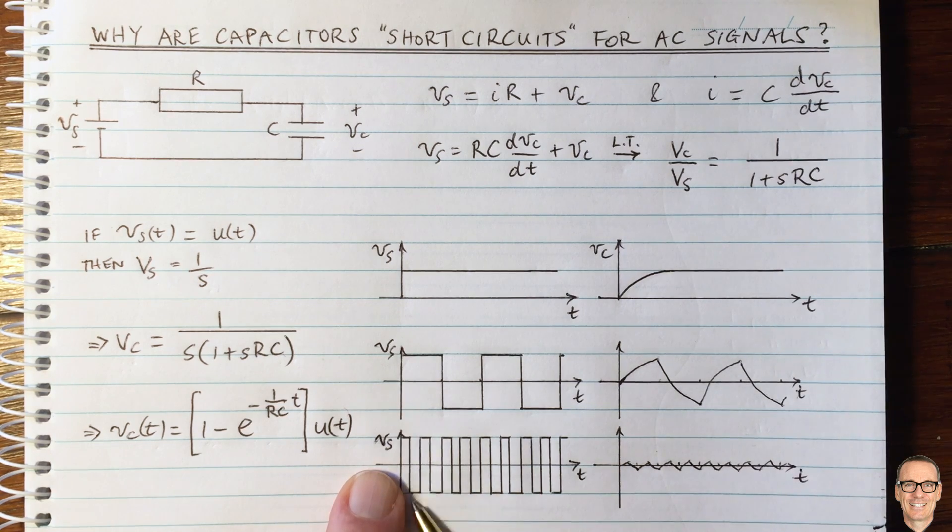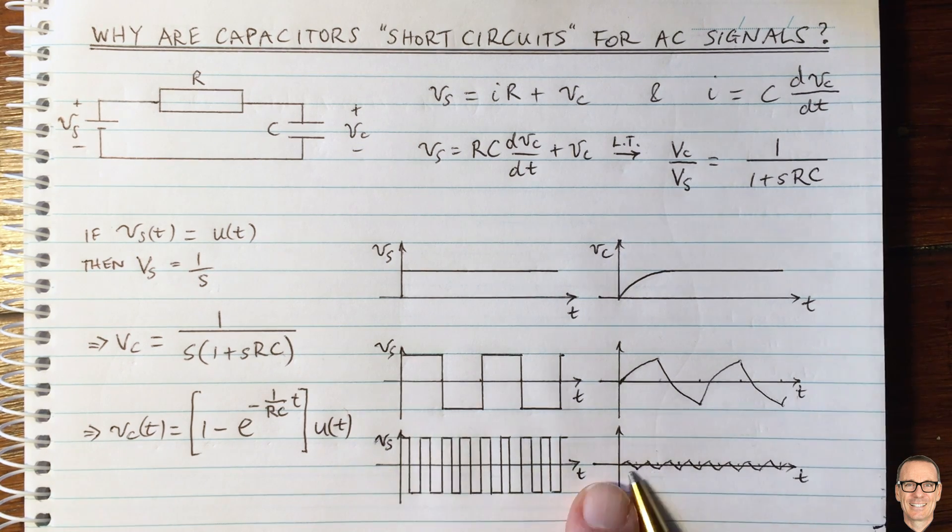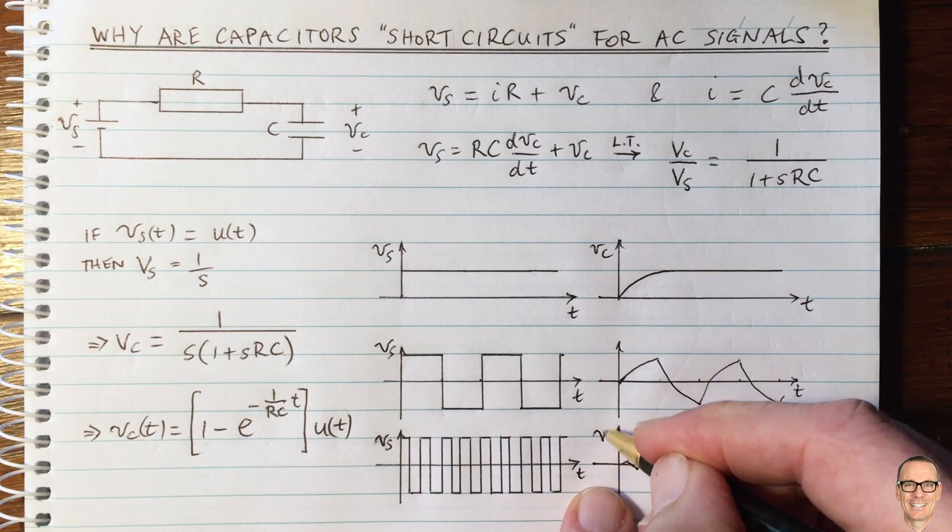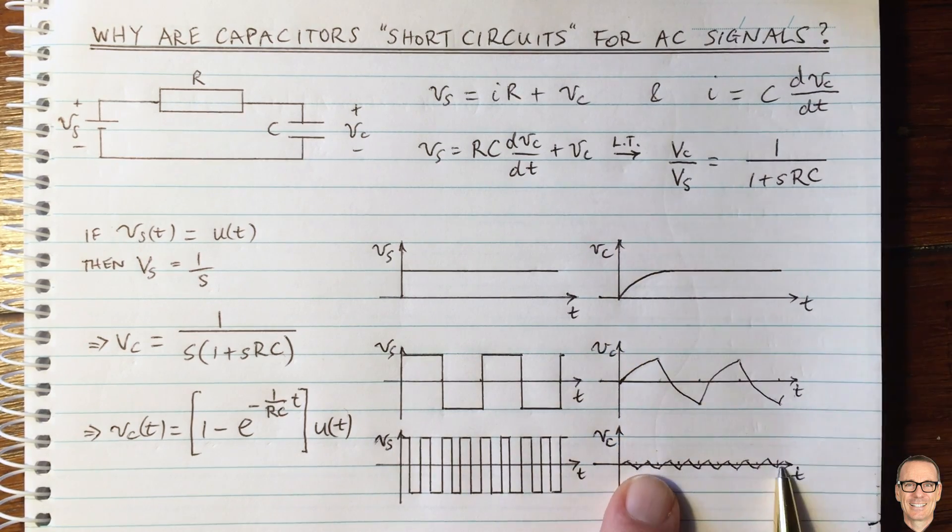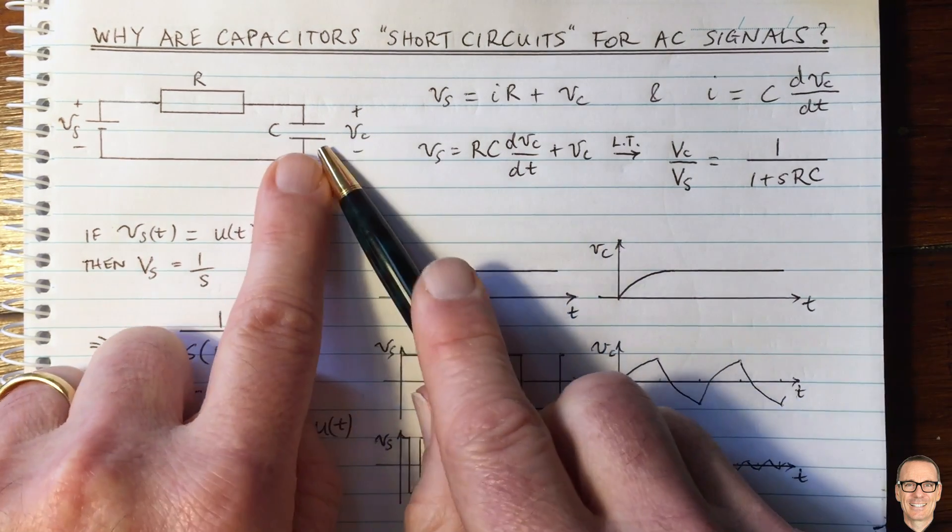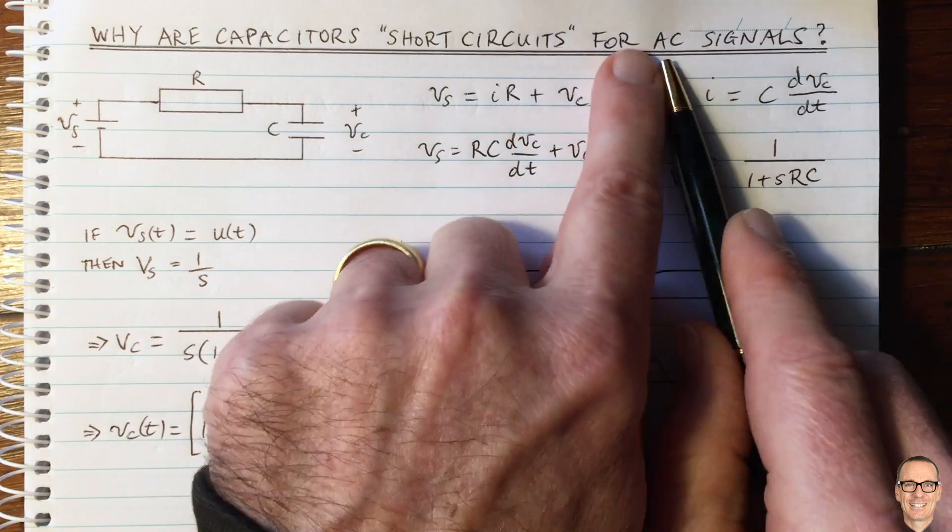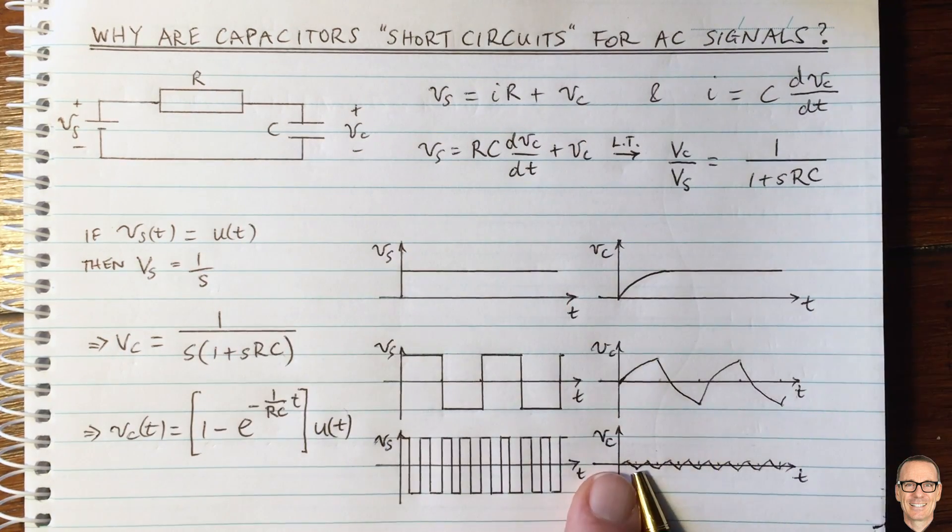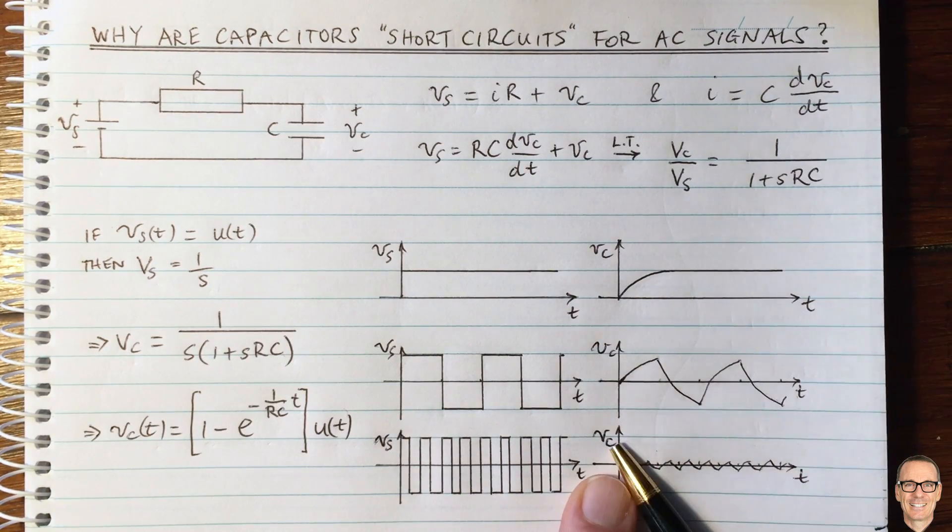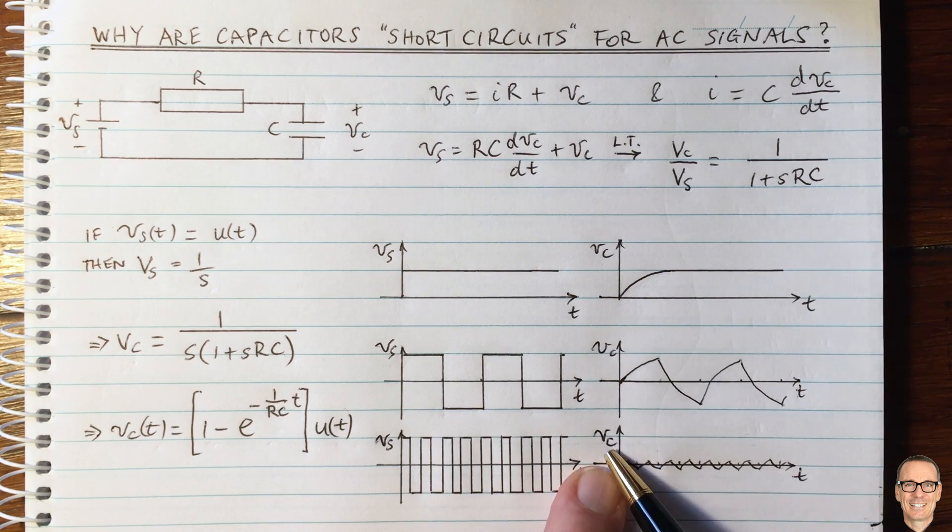So the input is an alternating current, but the output voltage across the capacitor is going to equal zero. So even though it's an open circuit, at AC signals, the output is a short circuit. The voltage does not change. It stays at zero.